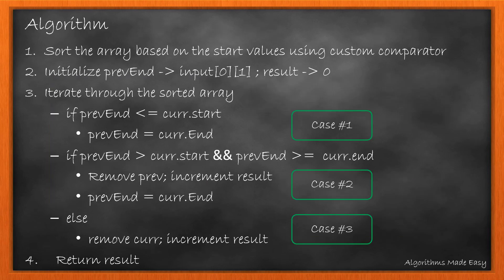Here's the algorithm. We sort the array based on the start value using a custom comparator. We initialize a variable to store the previous end and result. We then iterate through the sorted array and check all the three cases. At the end, we return the result.